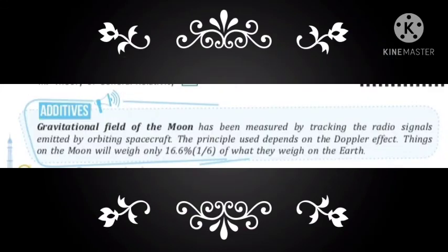Let me tell you about the gravitational field of the moon. The gravitational field of the moon has been measured by tracking the radio signals emitted by orbiting spacecraft. The principle used depends on the Doppler effect.